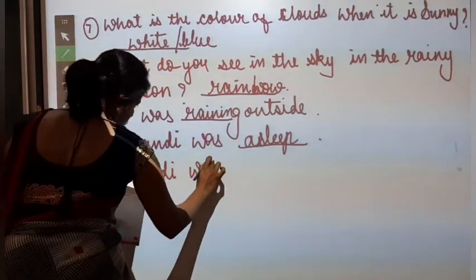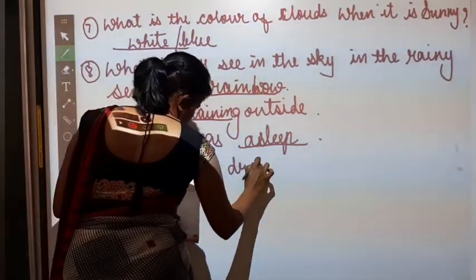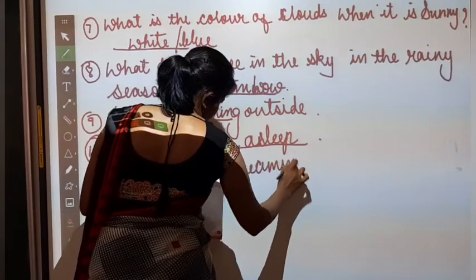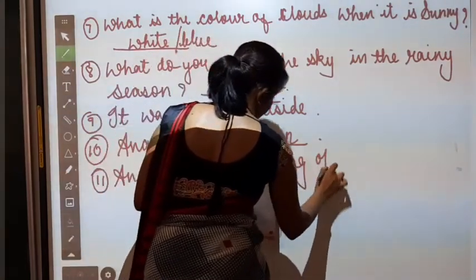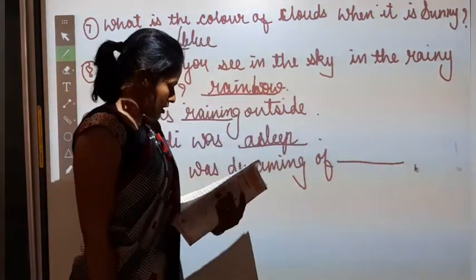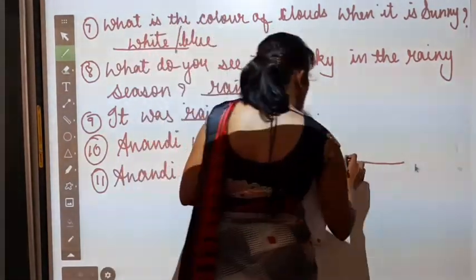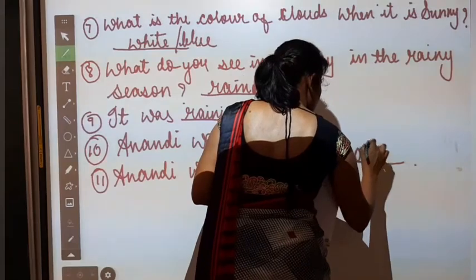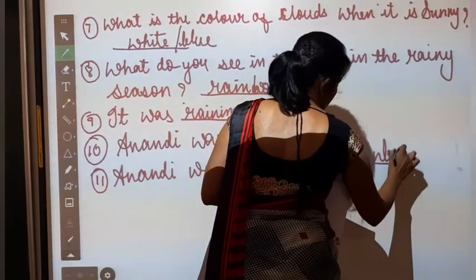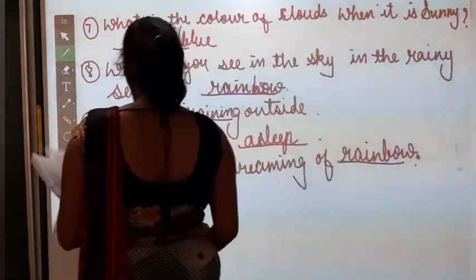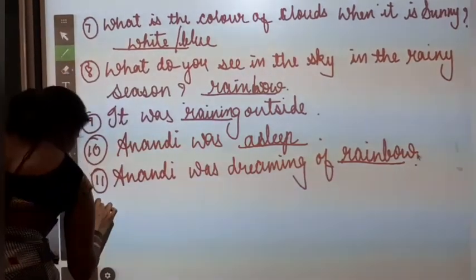Anandi was dreaming about dash. Who kis ke sapne dekh rahi thi? Colors, flowers, rain and rainbow. So she was dreaming about a rainbow. Okay? Number ten.